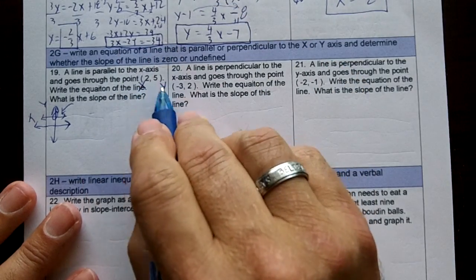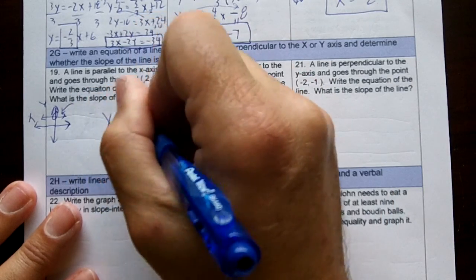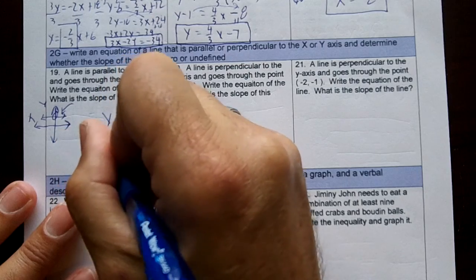Write the equation of the line. The equation is going to go through the y-axis, so the answer is going to be y equal 5. And if it's a horizontal line, the slope is 0.